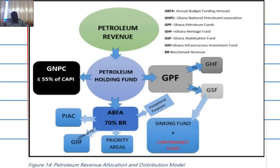The way money in the ABFA is supposed to be managed is such that where we don't have a long-term development plan, we are guided by medium-term priorities or strategy. In the absence of these, the law provides specific priority areas that petroleum revenue should focus on. In any fiscal year, not more than four priority areas are supposed to be chosen, and when those priority areas are chosen, they are implemented for three years before a review takes place. Those reviews are supposed to be approved by Parliament.